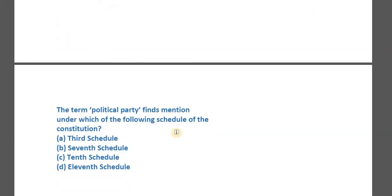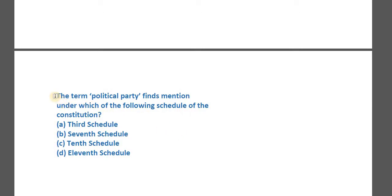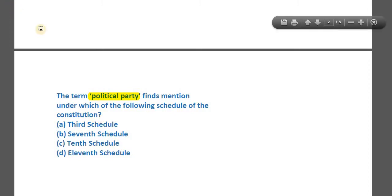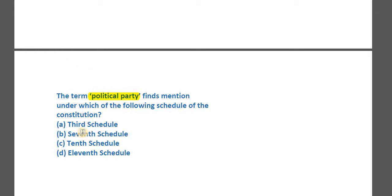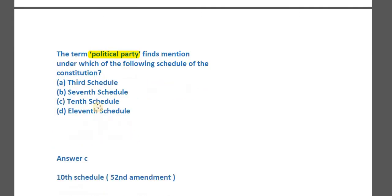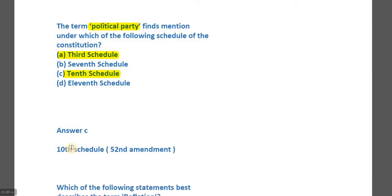Moving to question number two, which is quite simple: the term 'political party' finds a mention under which schedule of the Constitution? The options are the third schedule, seventh schedule, tenth schedule, or eleventh schedule. The question could also be framed as whether political party finds any mention in the Constitution at all. Pause and try to come up with the right answer.